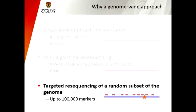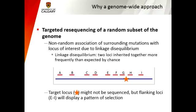Essentially I'm re-sequencing a targeted random subset of the genome. For this it's important to keep in mind that we assume there is a non-random association of mutations surrounding the locus of interest due to linkage disequilibrium — that is, two loci inherited together more frequently than expected by chance. Because I'm only sequencing small bits of the genome, I might not be sequencing the actual mutation causing resistance, but I will be sequencing loci around it, and because they are associated by inheritance, these will also show a pattern of selection.